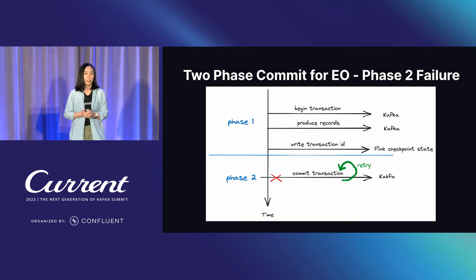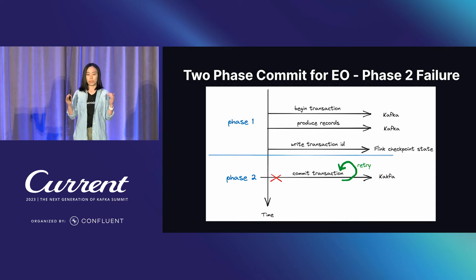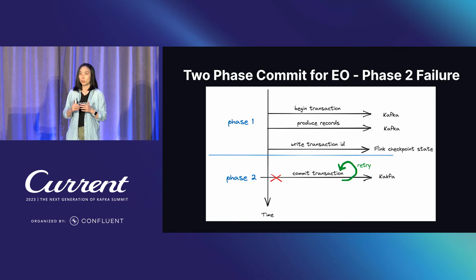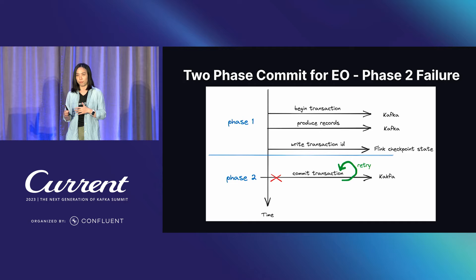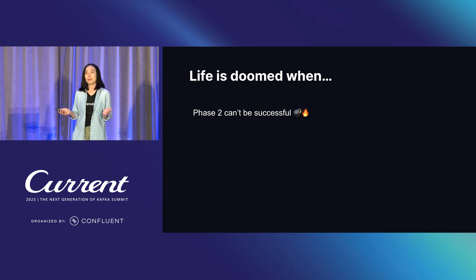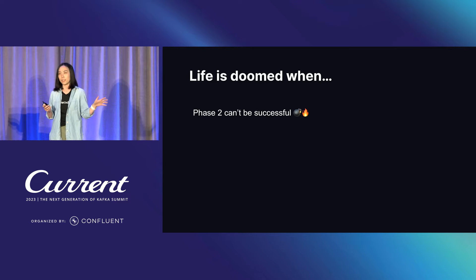Now let's look at phase two failure. One important thing: whatever is written to Flink checkpoint state is immutable — you can't rewrite history. So when phase one is successful, phase two has to be successful. If committing the transaction fails, it will just retry forever. So the primary goal is to not let phase two fail, because if it does, data loss can happen.